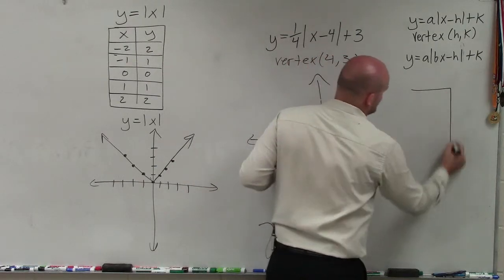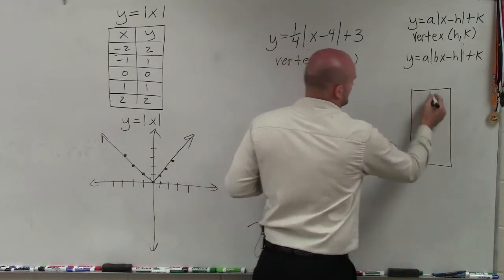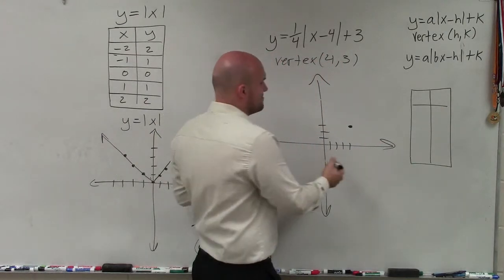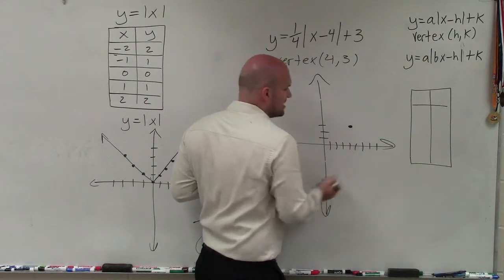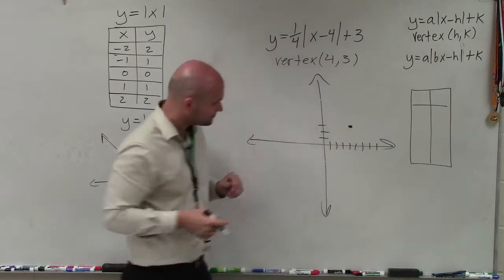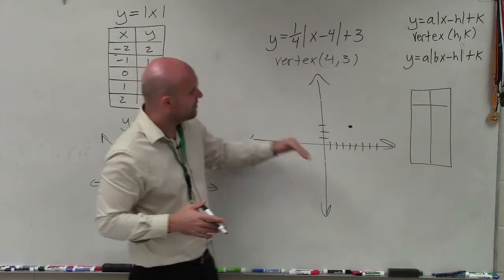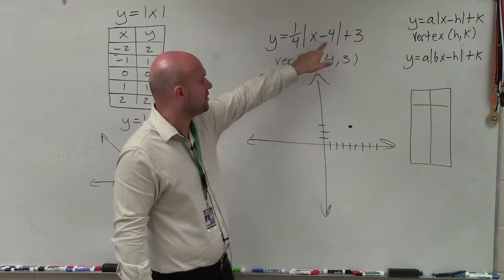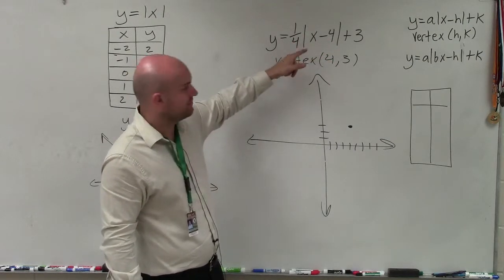So what I'm going to do is I'm going to choose two values. And you're going to have to be careful with what values you choose. It doesn't matter what values you do choose, but you're going to want to choose either two points to the left or two points to the right. Now, what I will say is I'm going to want to choose two points that are going to be very easy, that when I subtract them by 4, I can multiply them by one-fourth.